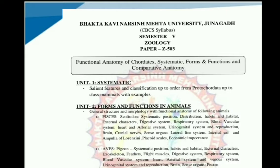Sub-phylum Vertebrata is divided into 2 superclasses: Pisces and Tetrapoda. Superclass Pisces is divided into 3 main classes: Placodermi, Chondrichthyes, and Osteichthyes. Then superclass Tetrapoda is divided into 4 main classes: Amphibia, Reptiles, Aves, and Mammals.